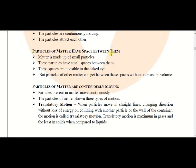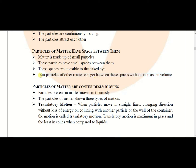Particles of matter have space between them — those spaces are invisible to the naked eye, and the particles of matter are also invisible to the naked eye. Those particles can be seen using an electron microscope. Particles of another matter can get between those spaces without an increase in volume. In the process of mixing, the molecules of one substance get placed in the intermolecular space of another substance without increasing the volume. For example, metal alloys are formed by mixing one metal with another metal.